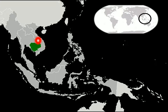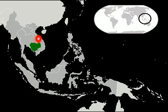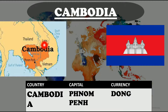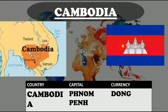Moving to the next country, we have Cambodia. Next to Thailand we have Cambodia — a country located in the southern portion of the Indochina Peninsula in Southeast Asia. It is bordered by Thailand in the Northwest, Laos in the Northeast, Vietnam in the East, and the Gulf of Thailand in the Southwest. This is the map of Cambodia. Its capital is Phnom Penh. Its currency is Riel. And this is the flag — three horizontal bands of blue, red, and blue, with the depiction of Angkor Wat in white on the red band.